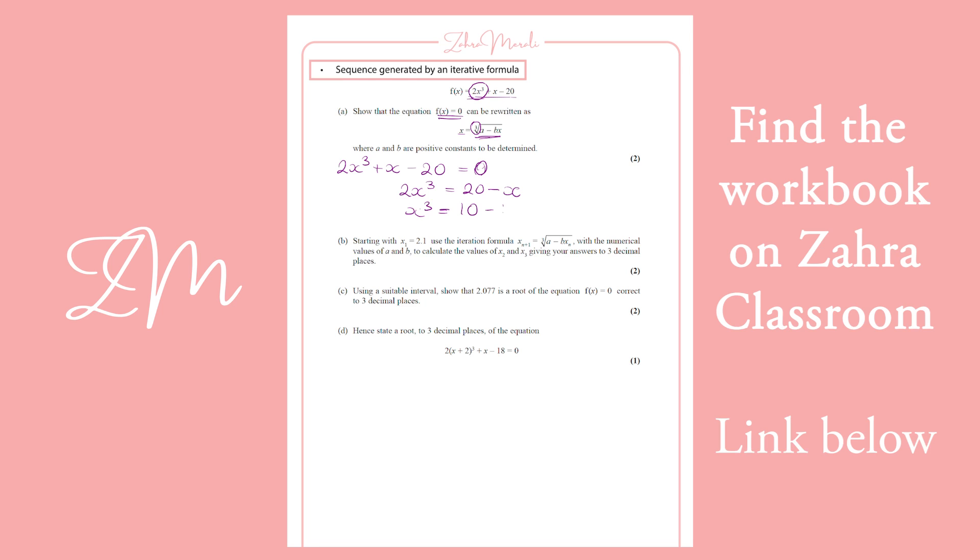So we get 10 minus a half x. And then we want to take the cube root. And when we take the cube root, we've got something in the expression in how we want to see it. Okay, so that's 10 minus, so if that's not clear, I've got x equals the cube root of 10 minus a half x.